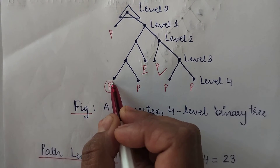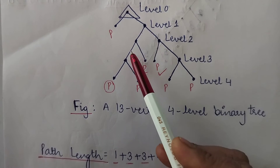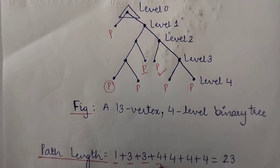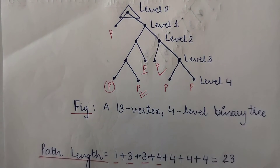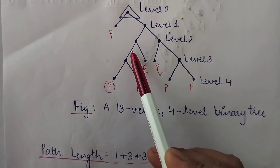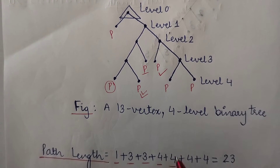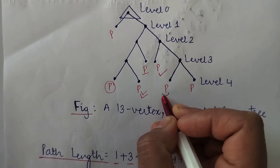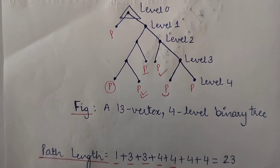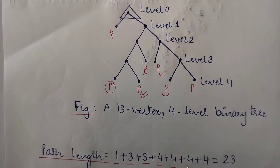For the next pendant vertex, the path length is 1, 2, 3, and 4 — so its path length is 4. The following pendant vertex also has a path length of 1, 2, 3, and 4, giving a path length of 4. And another pendant vertex has a path length of 1, 2, 3, and 4, so its path length is 4.